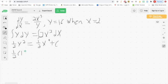So, 1 half, 16 squared, when x is equal to 2. So, 1 half, 2 to the fourth, plus c.